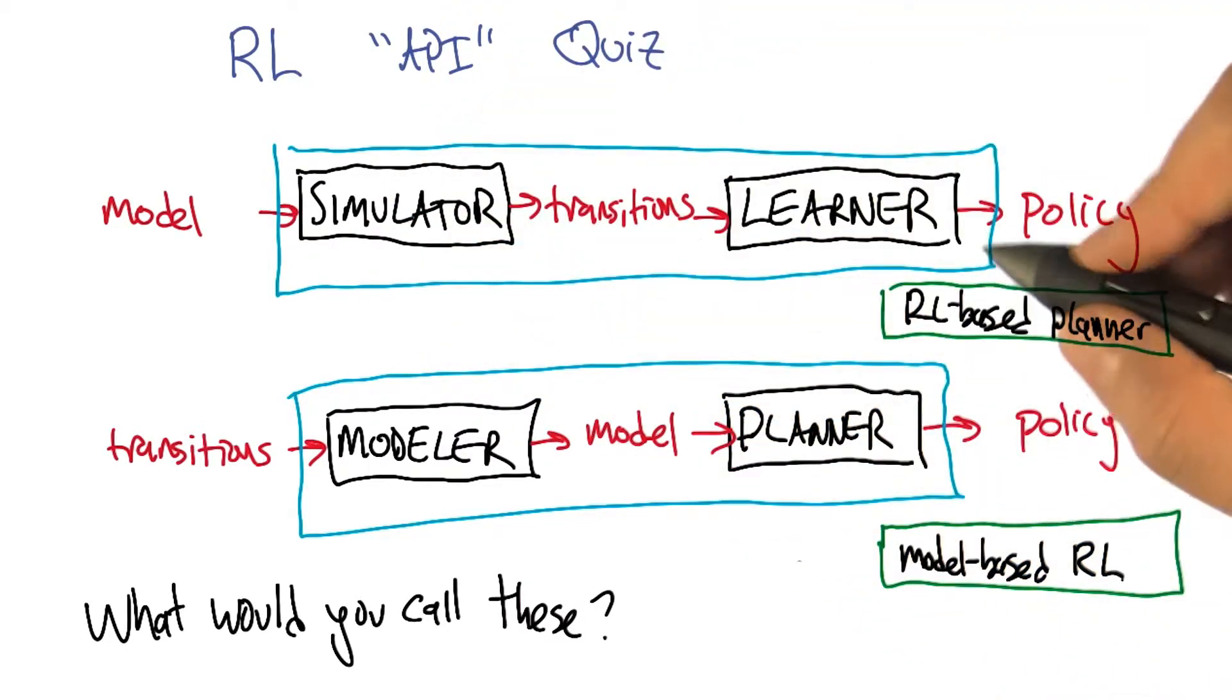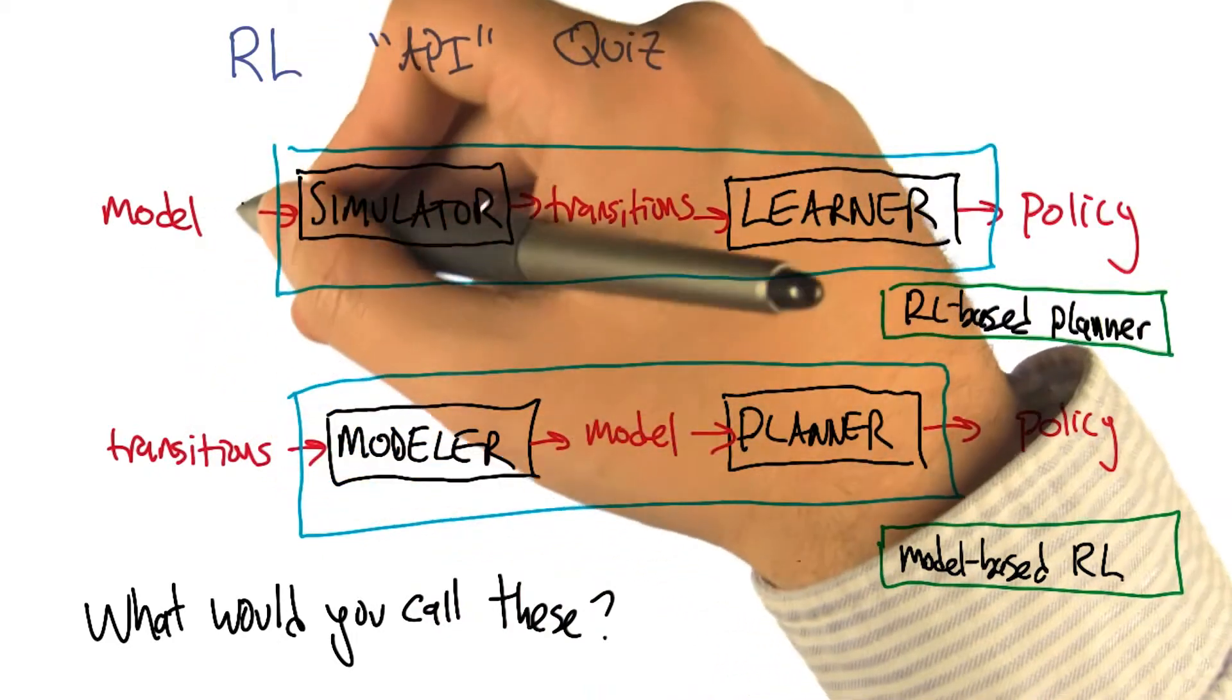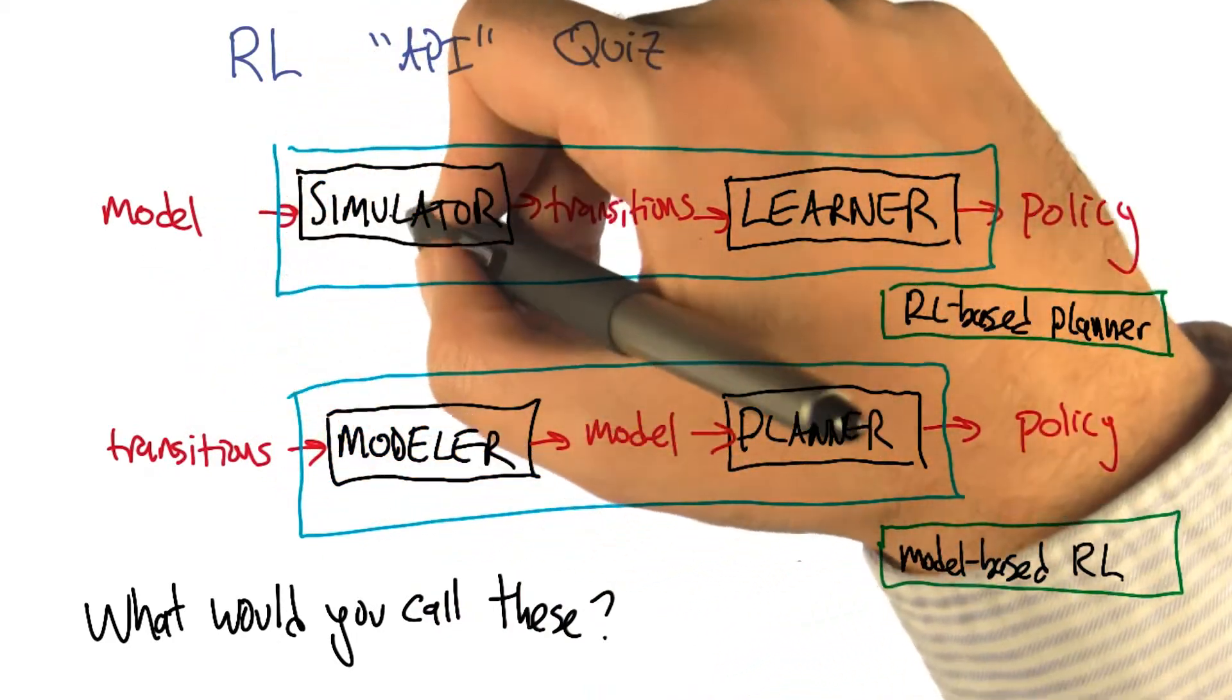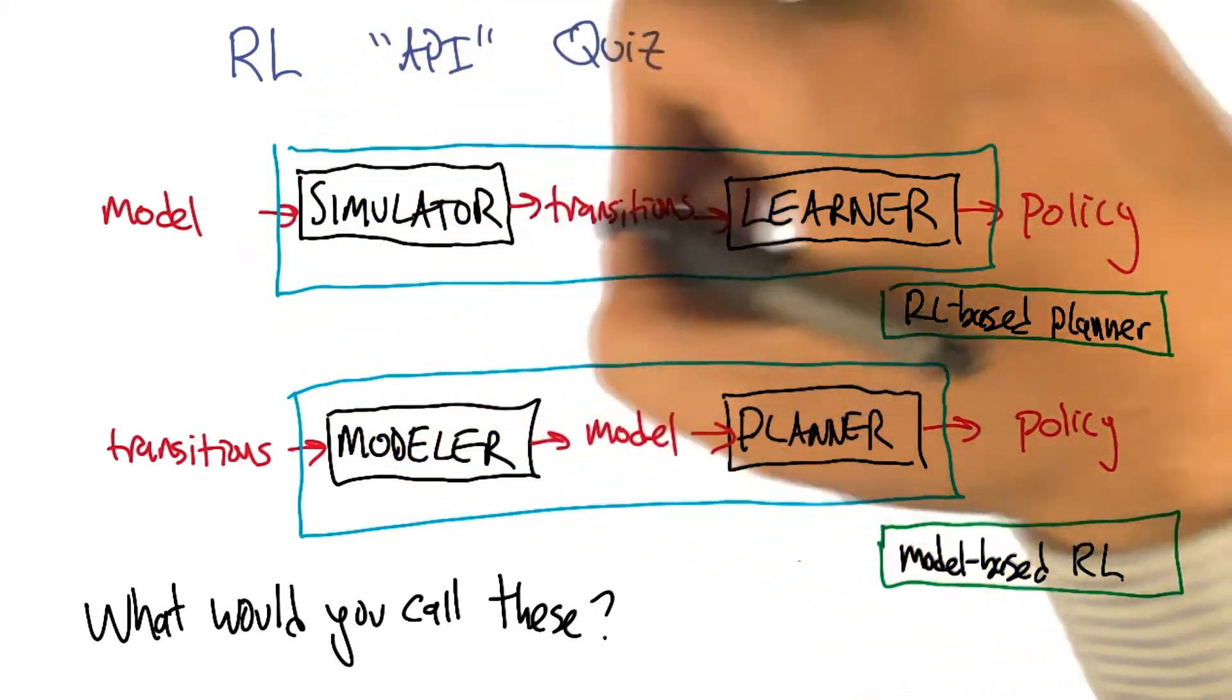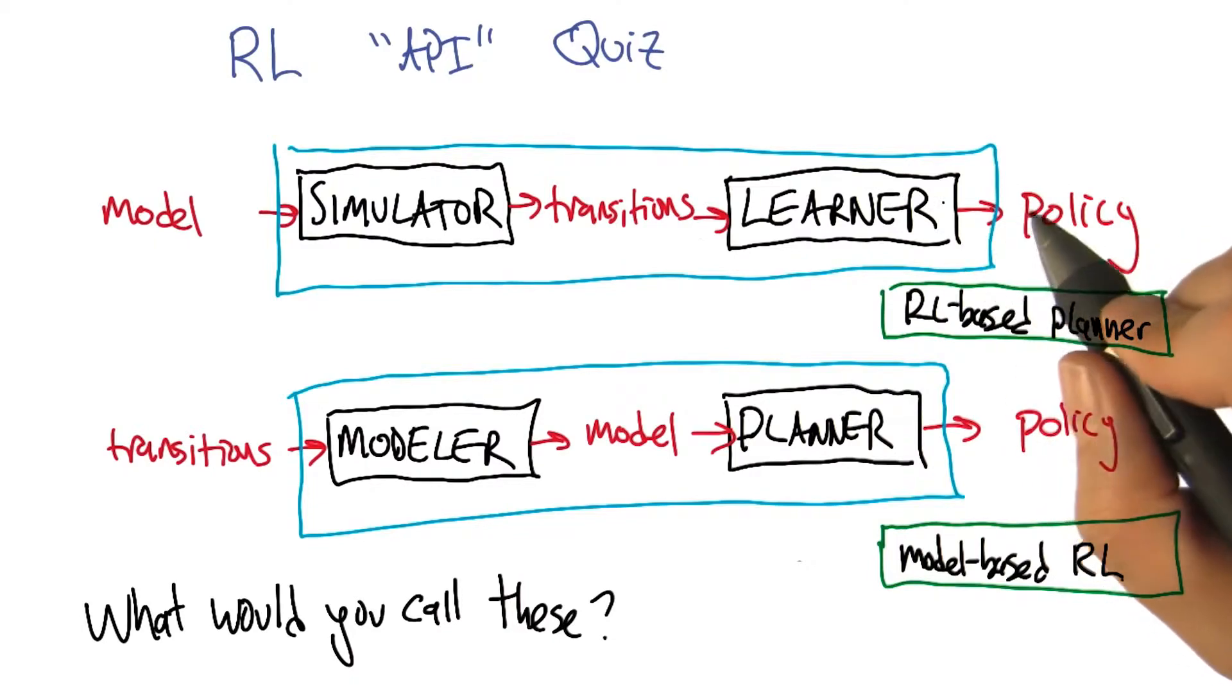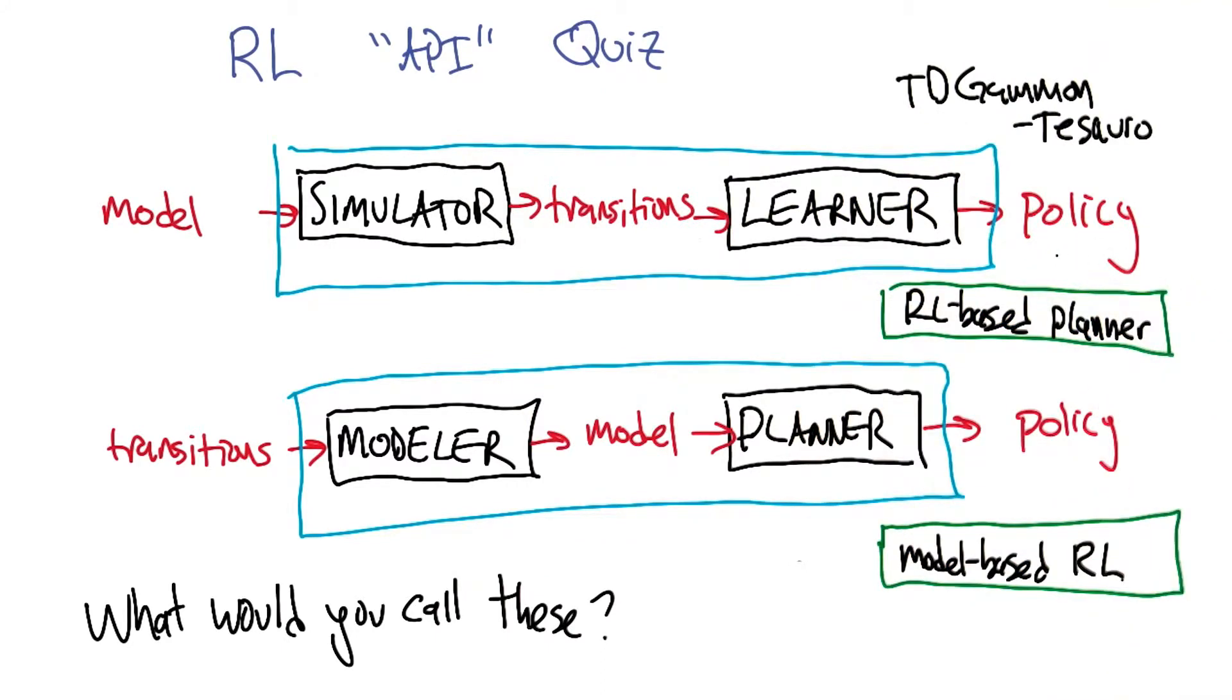was Jerry Tesauro's Backgammon playing program, which used exactly this approach. Backgammon is a board game, so we have a complete model of it, but we don't really know how to plan it. It's very complex, very large state space. So what he did is he actually used a simulator of Backgammon to generate transitions, and then used a reinforcement learning approach, TD, to create a policy for that. So his TD Gammon system followed exactly this overall pattern.